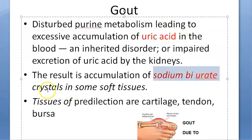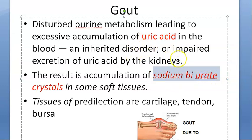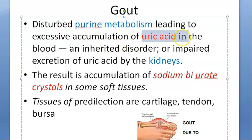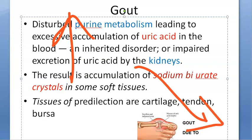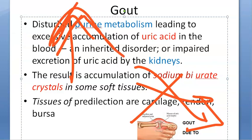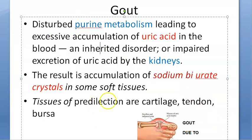To be very specific, it is sodium biurate crystals that are depositing here. Why? From where is this excess uric acid coming? It is coming because there is impaired excretion of uric acid by the kidneys, or there is a problem in purine metabolism — causing excess uric acid production. Uric acid levels will increase and deposit in your soft tissues.